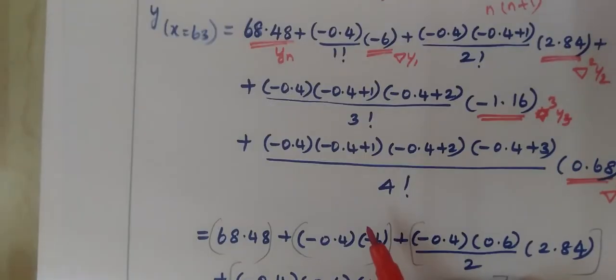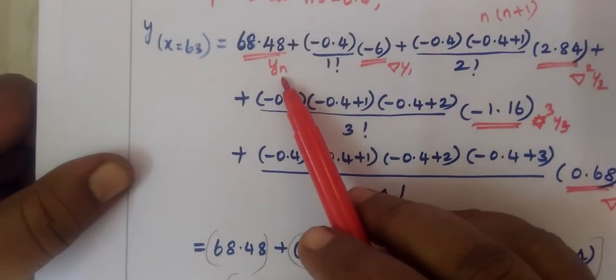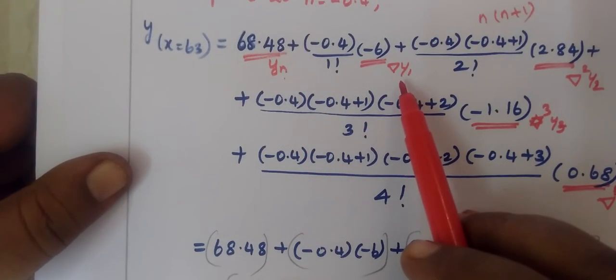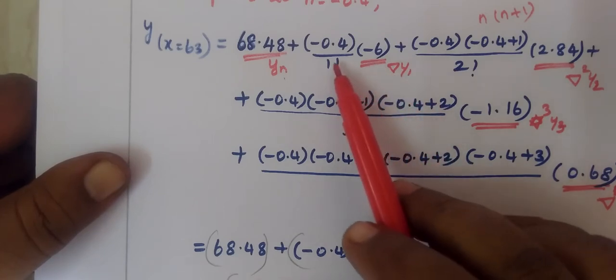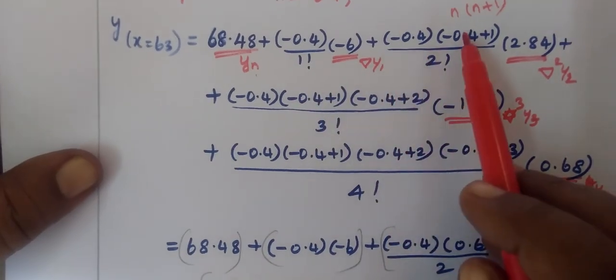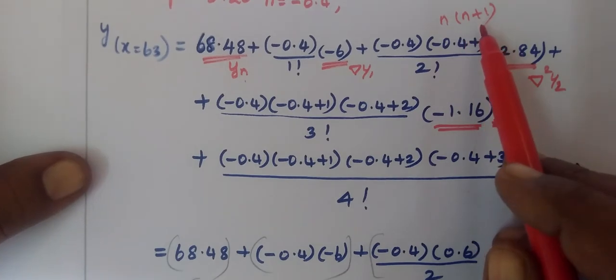We are getting y of x equals to 68.48. This is yn, delta yn. Within the formula is n into n plus 1.